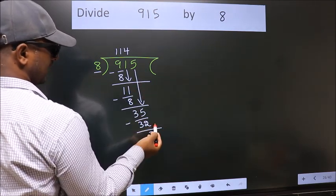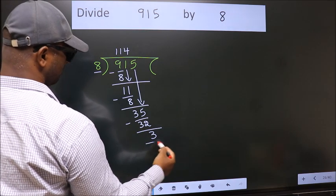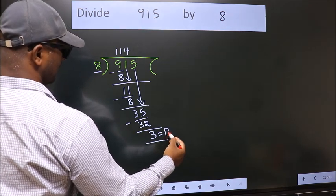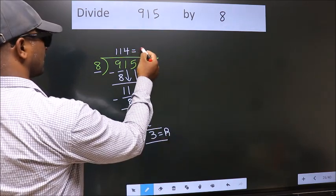No more numbers to bring down, so we stop here. This is our remainder. This is our quotient.